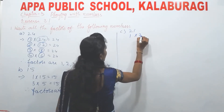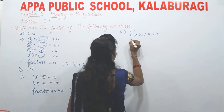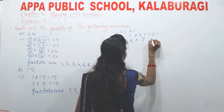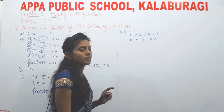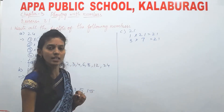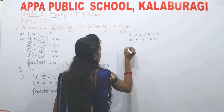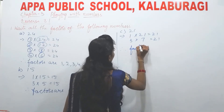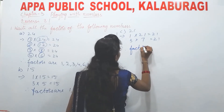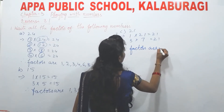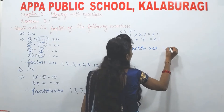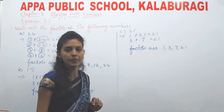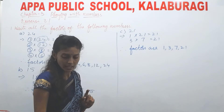Next is 21. 1×21=21, 3×7=21, 7×3=21, 21×1=21. So therefore the factors of 21 are 1, 3, 7, and 21.